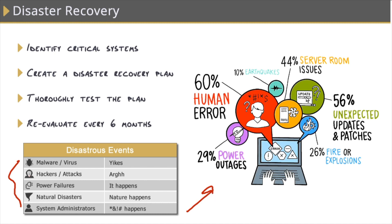The general workflow for coming up with a disaster preparedness plan looks something like this. Number one, we need to identify the critical systems required to run our business — anything that contains data and anything that people use, such as our database server and all the data within, our web servers, and our application servers.